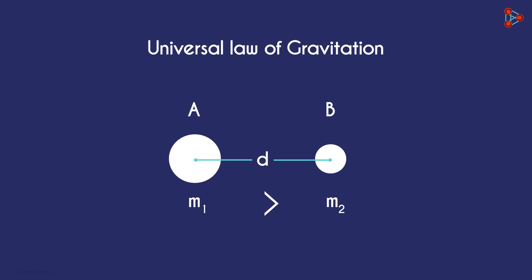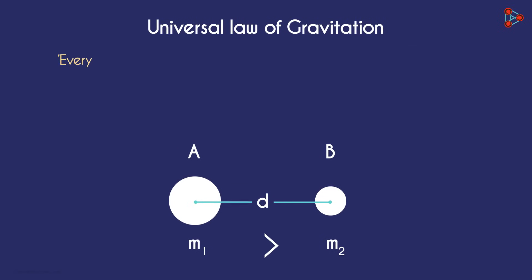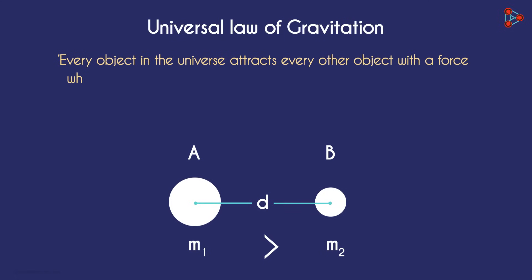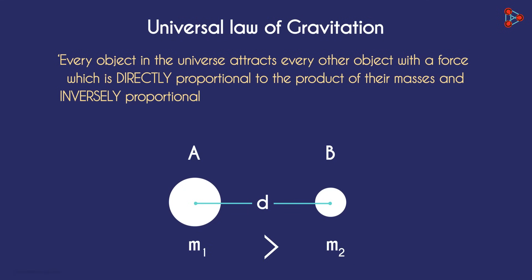The universal law of gravitation says that every object in the universe attracts every other object with a force which is directly proportional to the product of their masses and inversely proportional to the square of the distance between them.